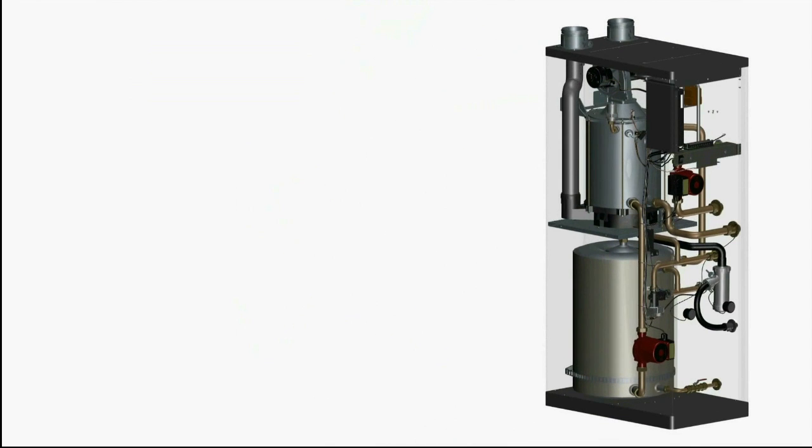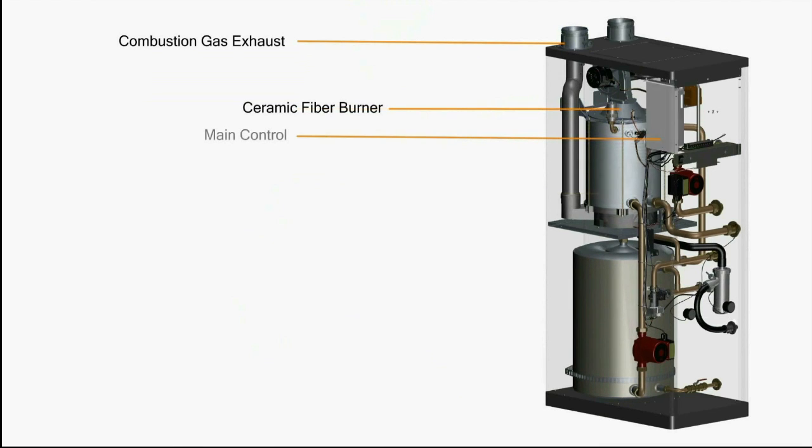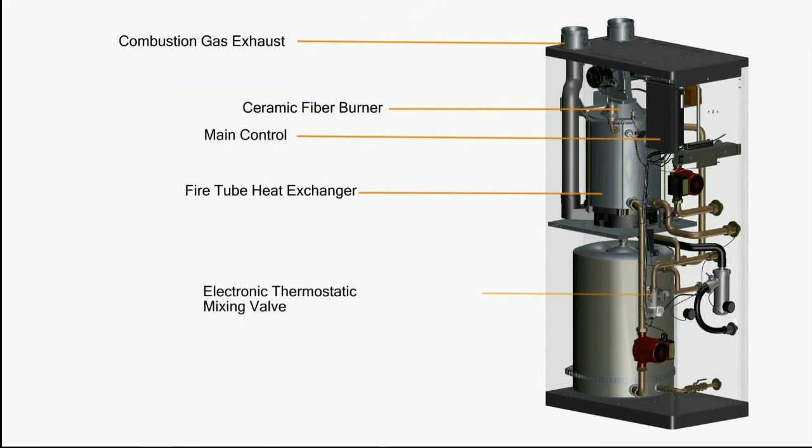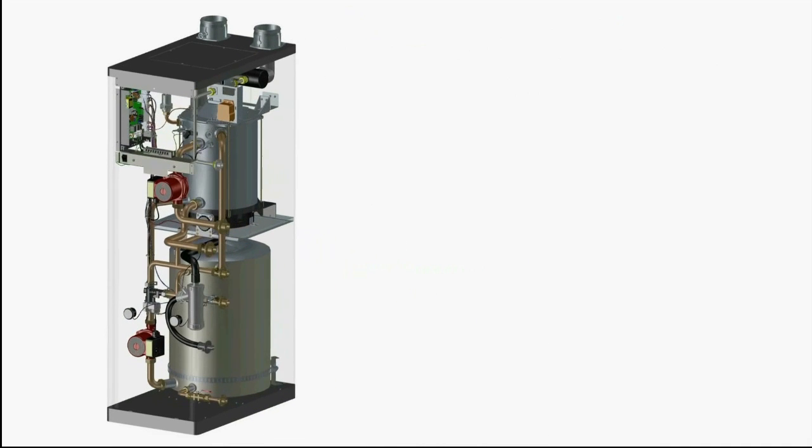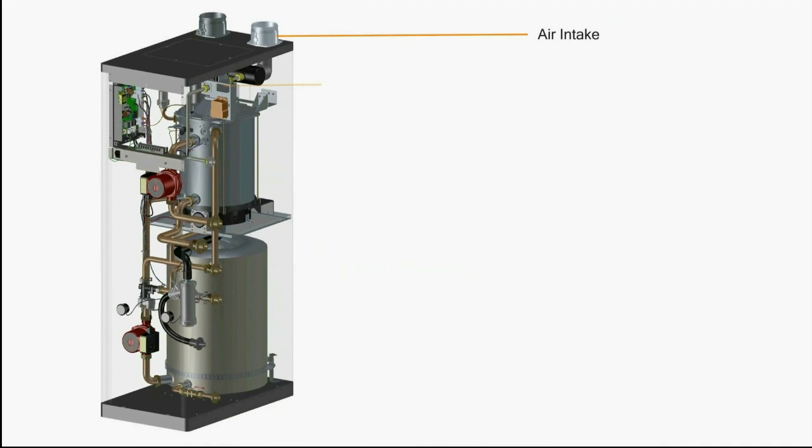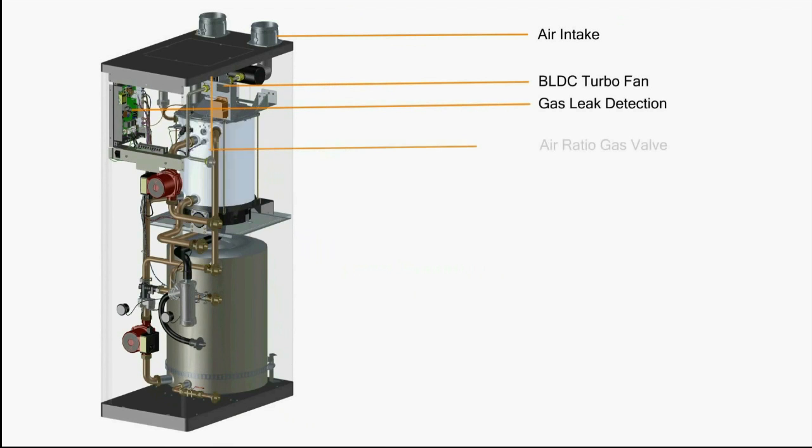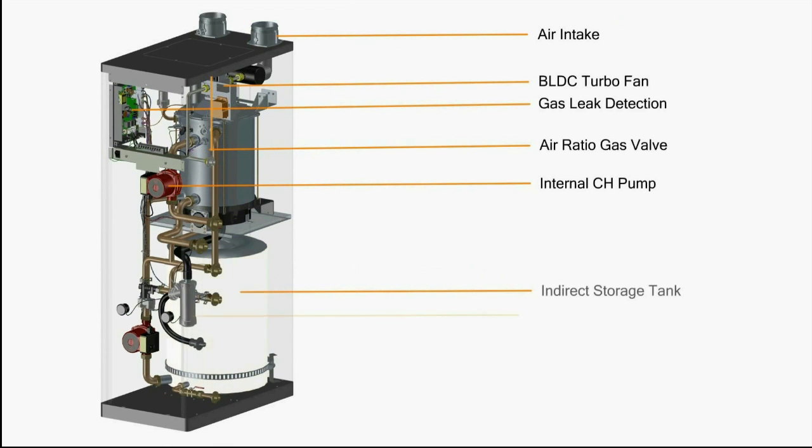It consists of a combustion gas exhaust, a ceramic burner, a main control, heat exchanger, mixing valve, a domestic hot water recirculation pump, an air intake, a BLDC turbofan, a gas leak detector, an air ratio gas valve, a central heating recirculation pump, an indirect storage tank, and a condensate trap.